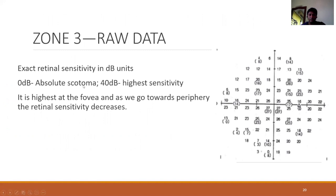The raw data gives the exact retinal sensitivity at all testing points. In HFA, values range between 0 to 40 decibels, where 0 indicates an absolute scotoma and 40 decibels indicates the highest sensitivity. Sensitivity is usually highest around the fovea, between 30 and 35 decibels, and progressively drops in the periphery.